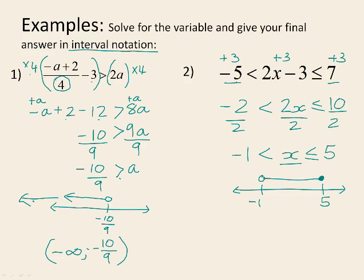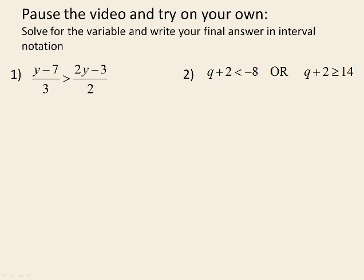We use a solid line in between the two values to show it's all the numbers in that range. In interval notation, negative 1 is not included so it gets a round bracket, and 5 is included so it gets a square bracket. In your homework book there are some examples for you to try, so please pause the video and try these on your own.